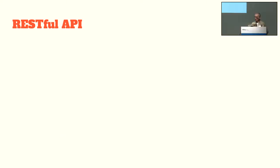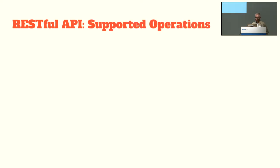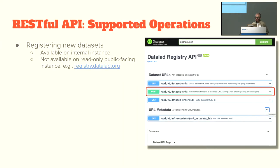Besides the UI, the dataset registry also provides an API. The OpenAPI schema for the API is available for download, and with it you can use the OpenAPI generator to generate a client to interact with the registry. Additionally, interactive documentation of the API is available through Swagger and two other interfaces. The API allows registering of new datasets, although this particular feature is currently disabled in our public-facing instance.